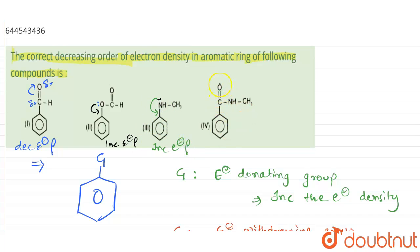The fourth compound also has an oxygen group present, which has electronegative character. It will pull electrons towards itself, making the attached carbon electron deficient. This electron deficient carbon will then pull electrons from the benzene ring, deactivating it and decreasing the electron density.